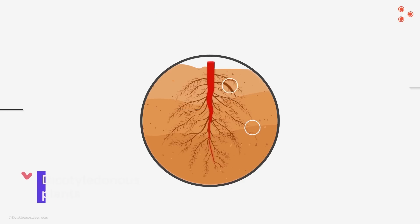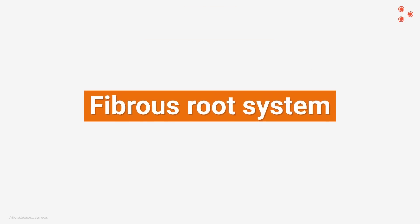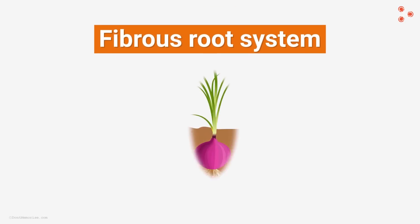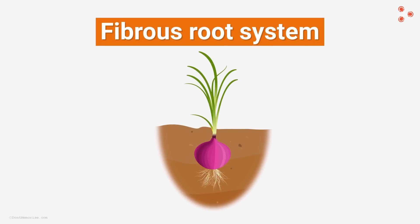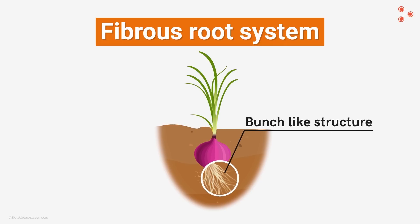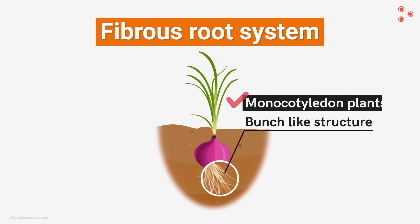The second type is the fibrous root system. This type does not contain a single primary root; rather, many smaller roots come together to form a bunch-like structure. These roots usually do not grow too deep, unless the tree is very huge. Monocots usually have the fibrous root system.